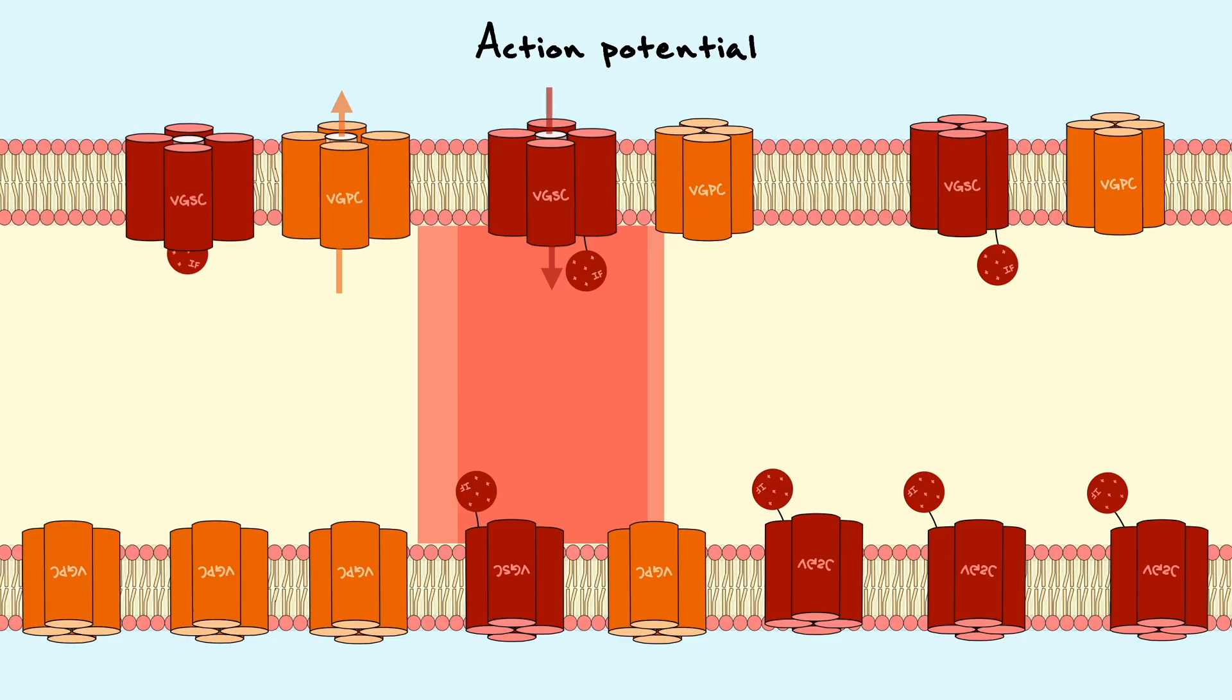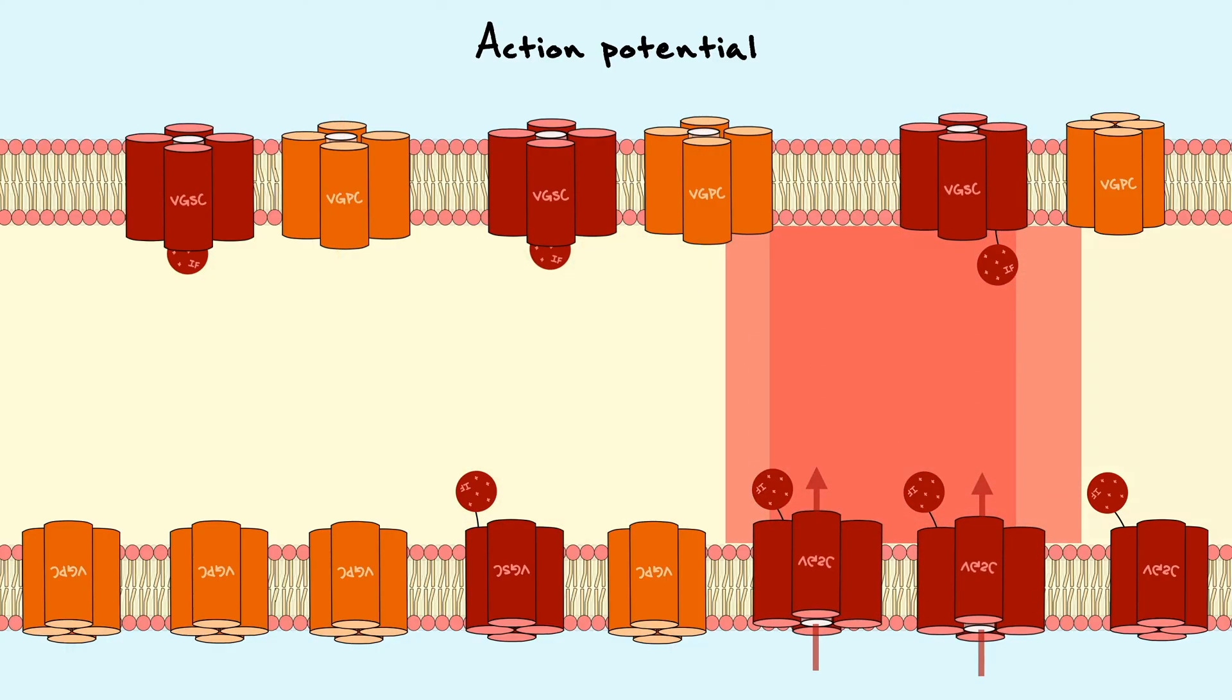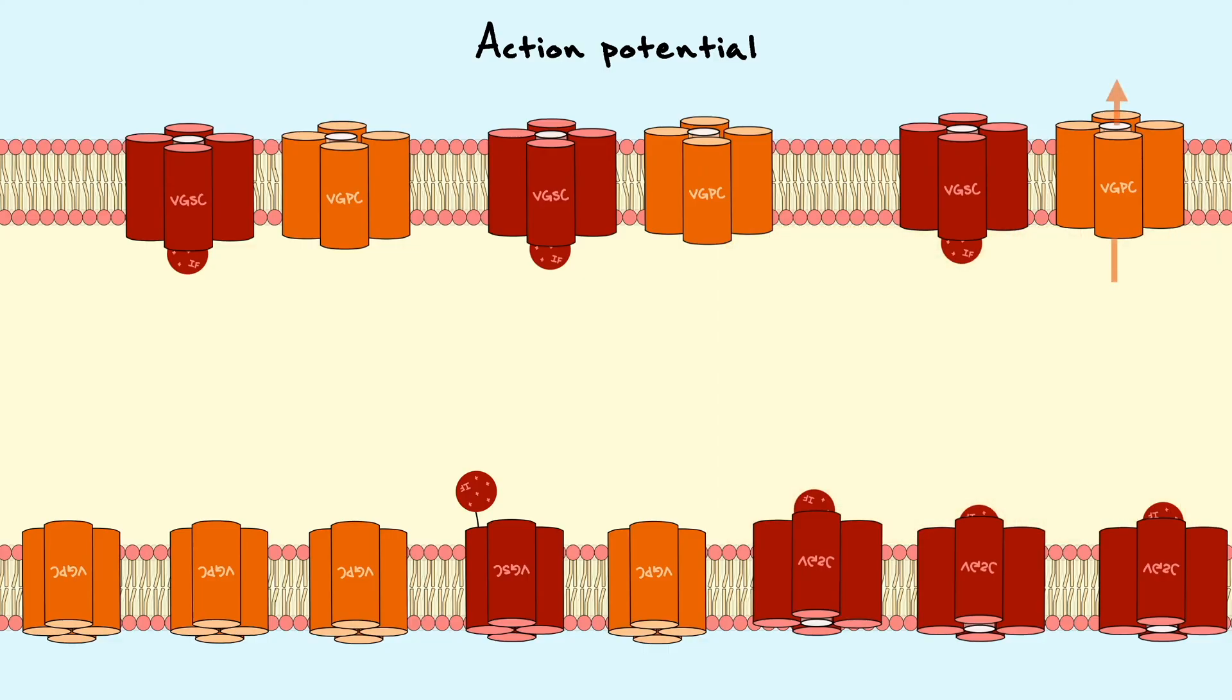Now, the passive propagation of the positive charges that have entered the cell as a consequence of voltage-gated sodium channels opening, depolarizes the next local sub-region of the axon, such that an action potential fires there as well. This continuous cycle of depolarization and hyperpolarization is passed through the axon up until it reaches the axon terminal.